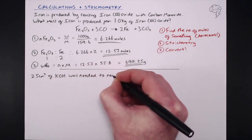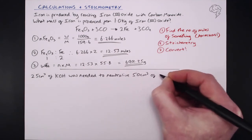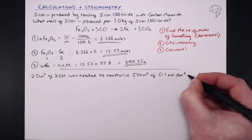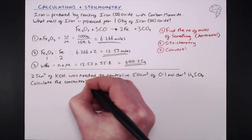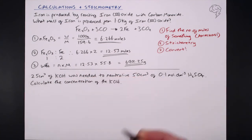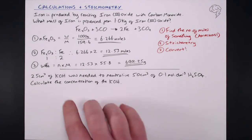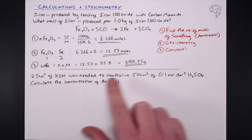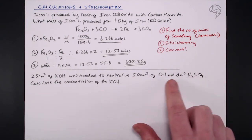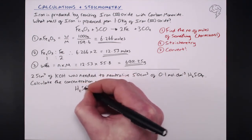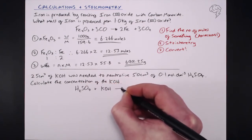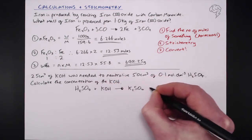The second example involves aqueous solutions: 25 cm³ of potassium hydroxide was needed to neutralize 50 cm³ of 0.1 mol/dm³ sulfuric acid. Calculate the concentration of the potassium hydroxide. We know the volume of KOH and the volume and concentration of H2SO4. The balanced equation is: H2SO4 + 2KOH → K2SO4 + 2H2O.